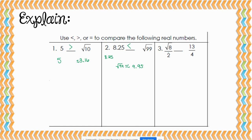Next, we have the square root of 8 over 2 compared to 13 fourths. The square root of 8 is approximately 2.83. So if we have 2.83 over 2, we want to look at both of those as decimals. If we do 2.83 divided by 2, we get 1.415. If we do 13 divided by 4, we get 3.25. We know that 3.25 is larger than 1.415, so the square root of 8 over 2 is less than 13 fourths.